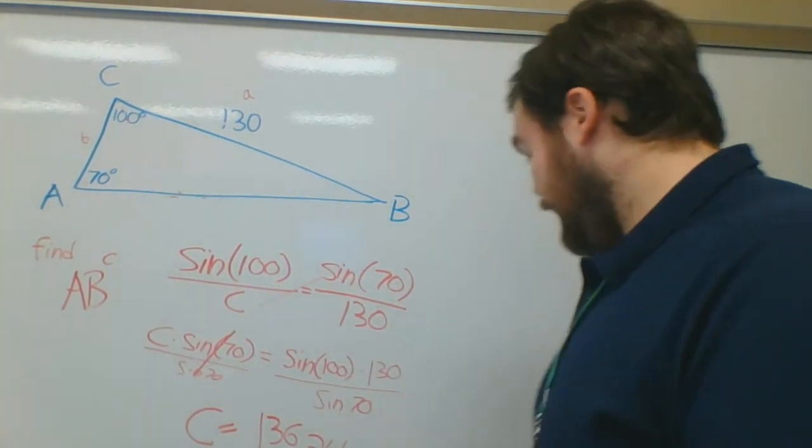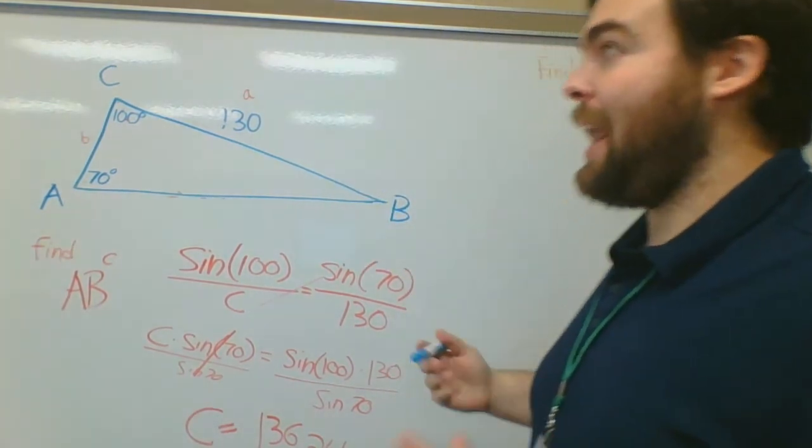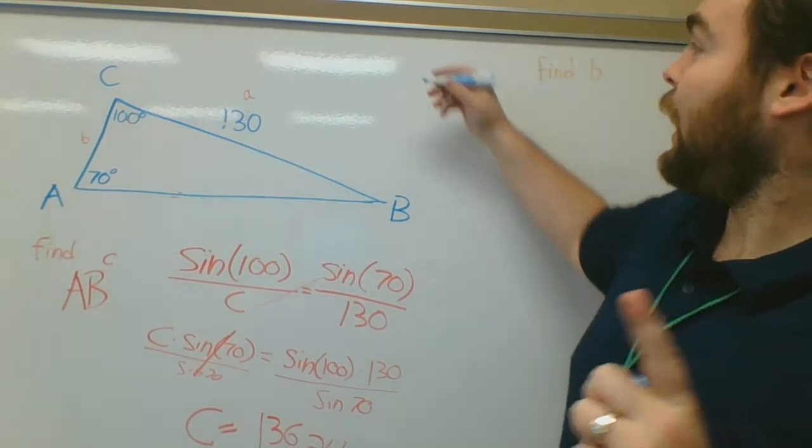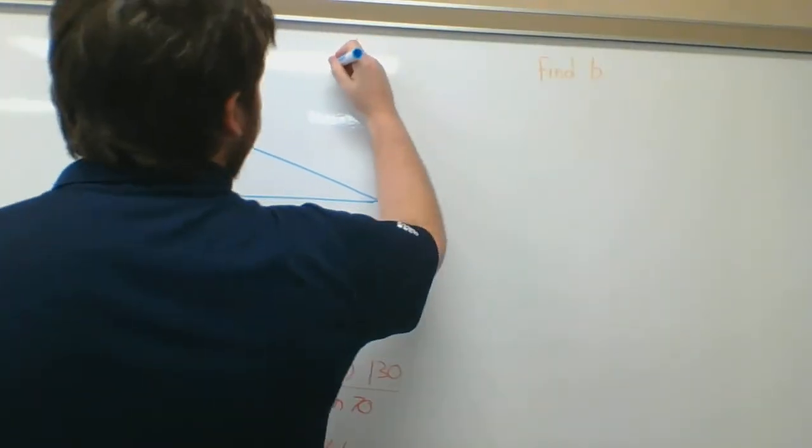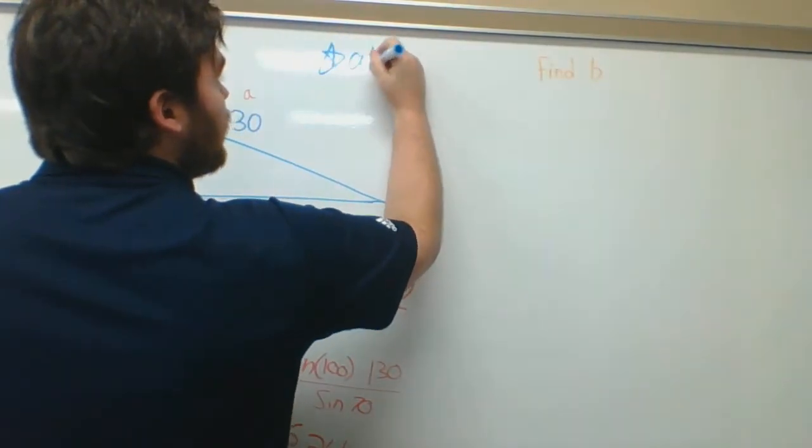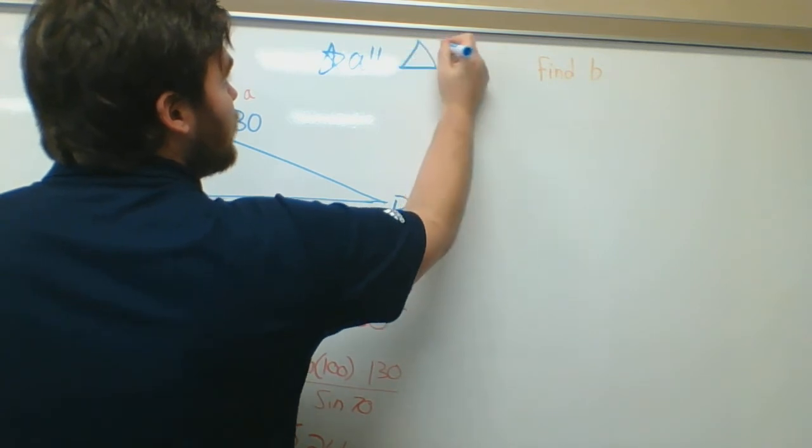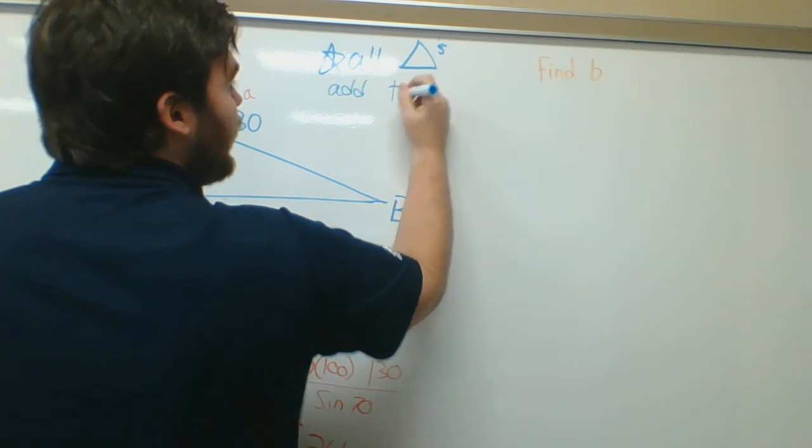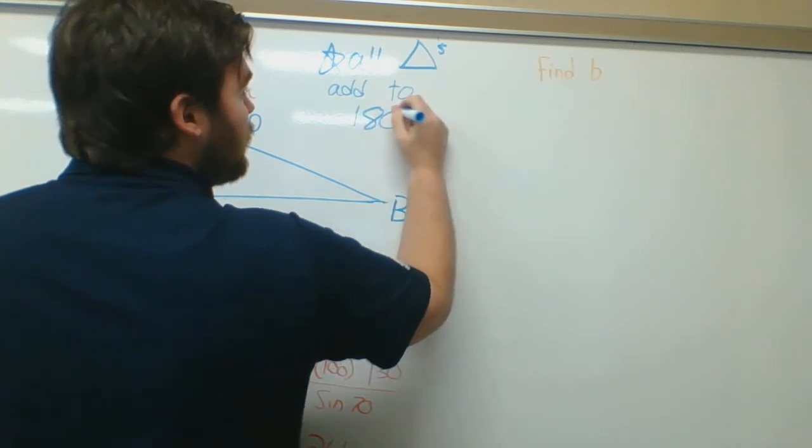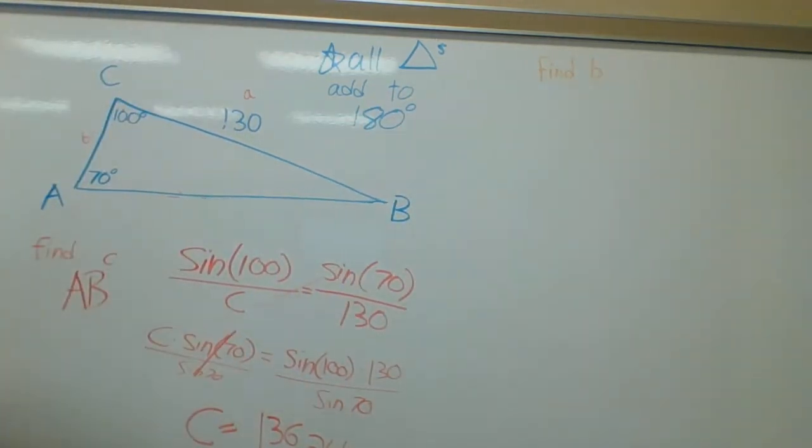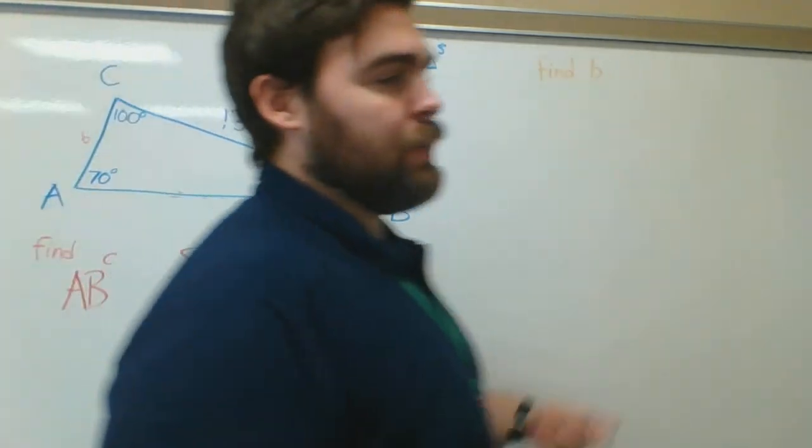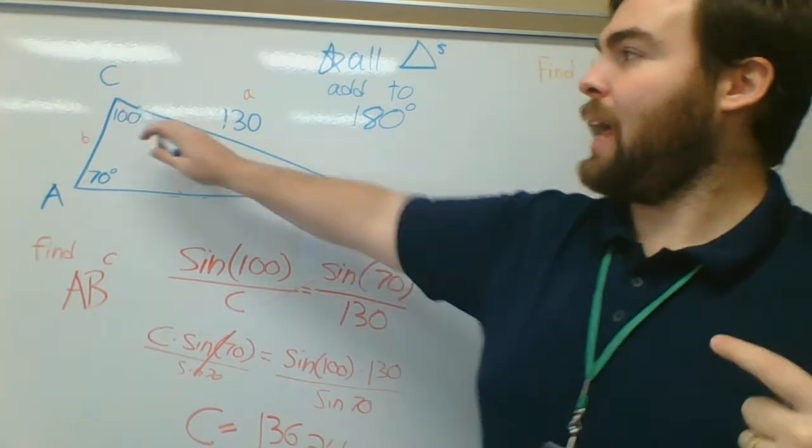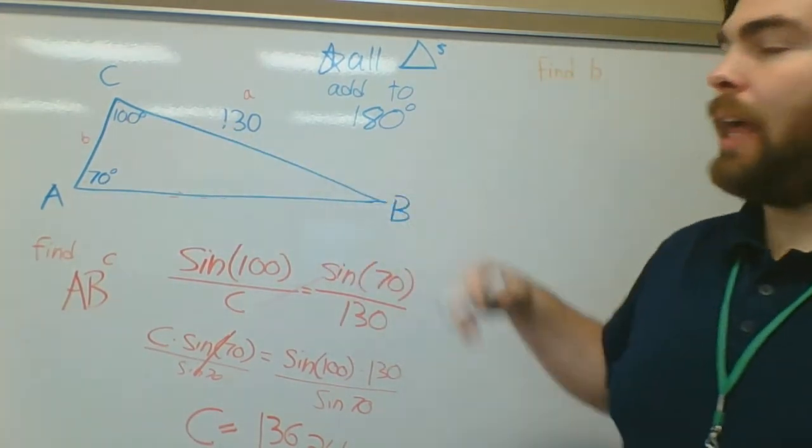The reason for that is something you've got to remember here. And if you want to make a star and make a note of this, all triangles add to 180 degrees. It doesn't matter what shape, size, anything. Every single triangle, when you add the degrees up, they'll all add up to 180.